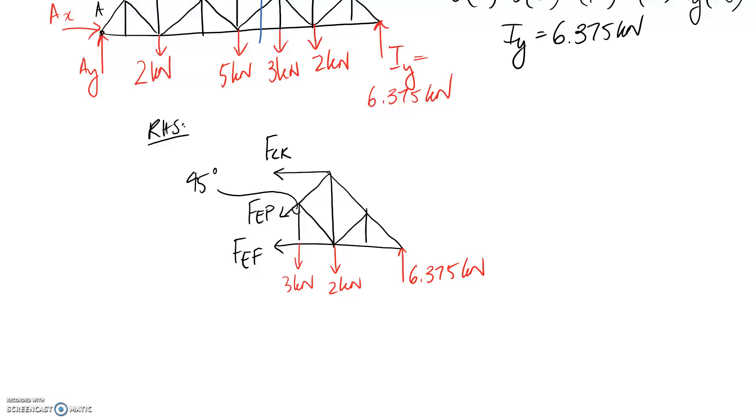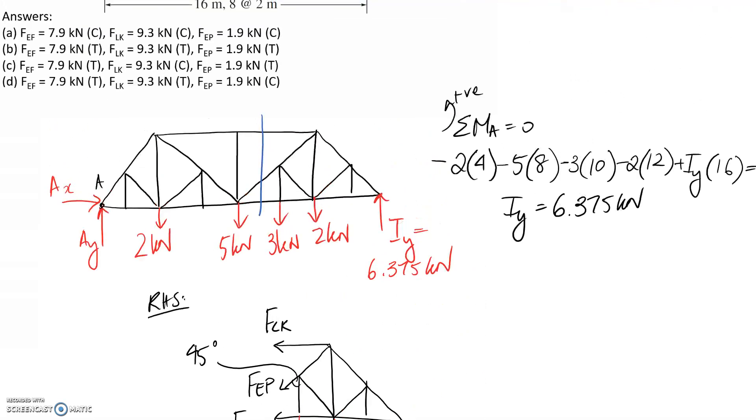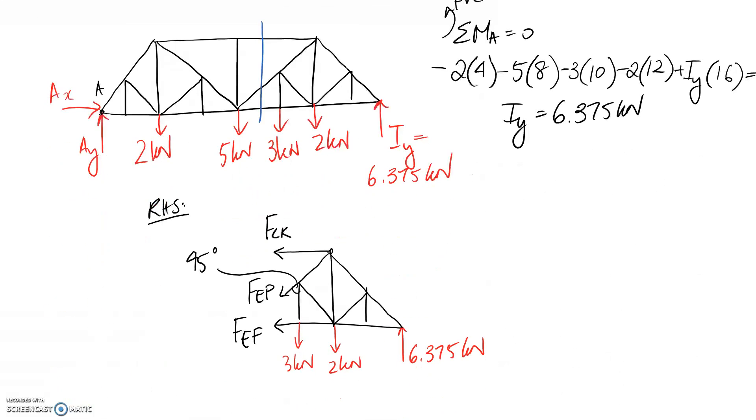Now we just need to use our three equilibrium equations to solve for the three unknowns. You can do any order of them, but some are more convenient than others in terms of simultaneous equations. The easiest one this time is probably summing about this point at the top here, which is point K. The reason is both FLK and FEP act through that point, so they shouldn't contribute to the equation, and it will just leave the one unknown. Another thing you could do is sum down here at point E. Again, both of these act through the point, so they wouldn't contribute, and you'd just be left with the one unknown.